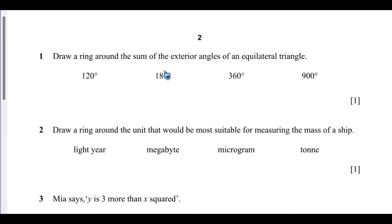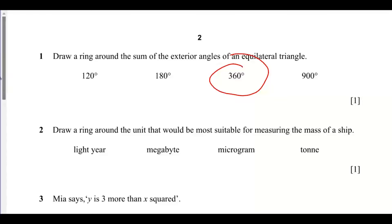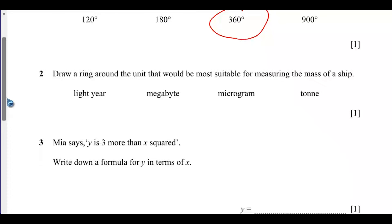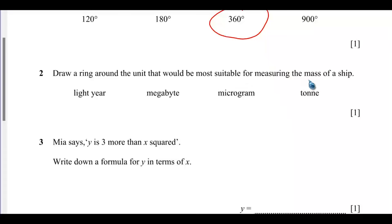Question 1: Draw a ring around the sum of the exterior angles of an equilateral triangle. The sum of the exterior angles of any polygon is 360 degrees, so our answer will be 360 degrees. Question 2: Draw a ring around the unit that would be the most suitable for measuring the mass of a sheep. We're going to need kilograms because it is very heavy.